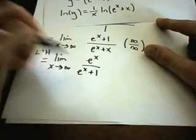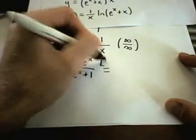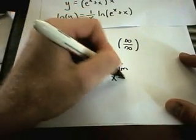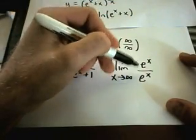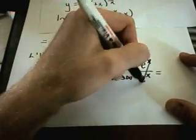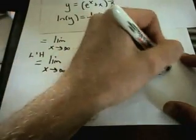This is still of the form infinity over infinity. I could do L'Hopital's rule one more time. The limit as x goes to infinity, I'll get eˣ over eˣ. This looks like infinity over infinity, but simplify with your algebra — eˣ over eˣ is just going to be 1. So the limit as x goes to infinity of 1 is just equal to 1.